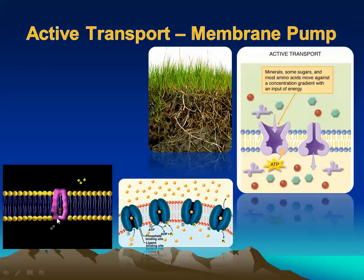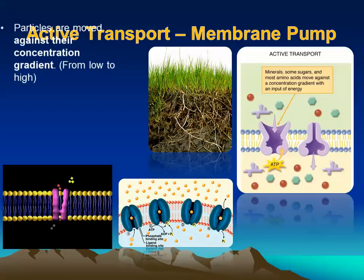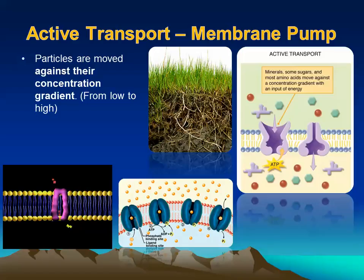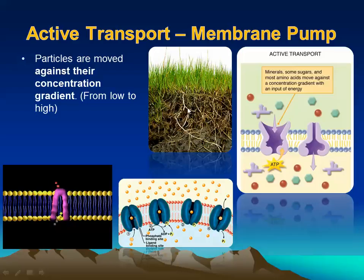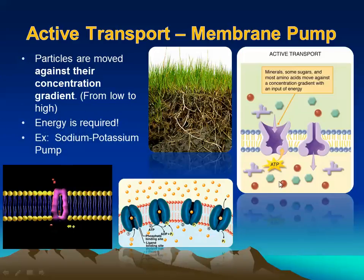Now for transport types that require energy. This looks like a protein channel, but we call it a pump because we're using ATP to move something across. Energy is needed because we're moving things against the concentration gradient — from low to high concentration. Plants, for example, must pump minerals in from soil when concentrations are too low to flow in naturally. One key example is the sodium-potassium pump, important in nerve cell transmission.